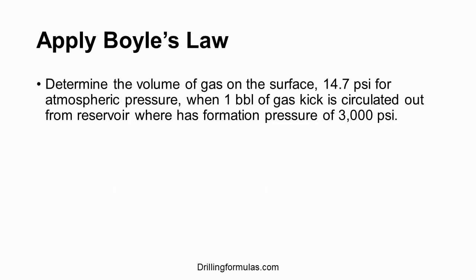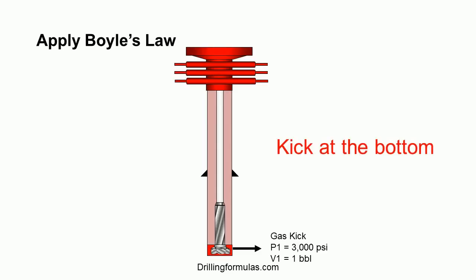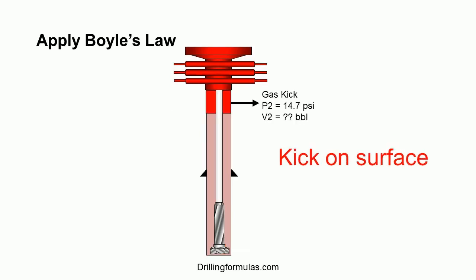Let's apply Boyle's Law to solve a question. Determine the volume of gas on the surface, at 14.7 psi atmospheric pressure, when one barrel of gas kick is circulated out from a reservoir with a formation pressure of 3000 psi. The kick at the bottom is one barrel at 3000 psi, and the surface pressure is 14.7 psi, atmospheric pressure.